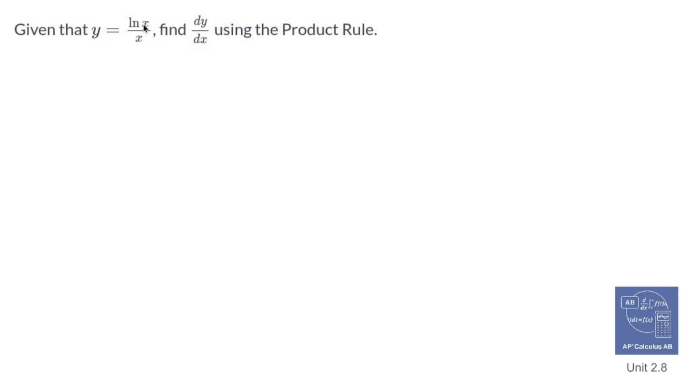Given that y equals ln of x over x, find dy/dx using the product rule. The product rule says if you have two functions multiplied together, you take the derivative of the first function and multiply it to the second function as is, then add the derivative of the second function multiplied to the first function as is. This doesn't look like that - it looks like something divided by something, not something times something.